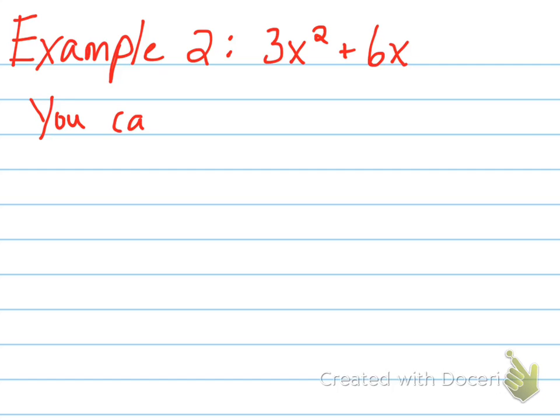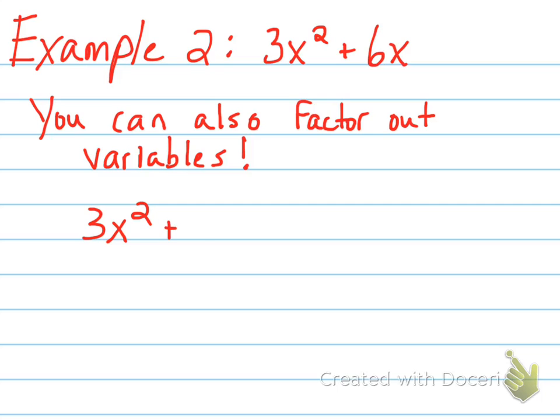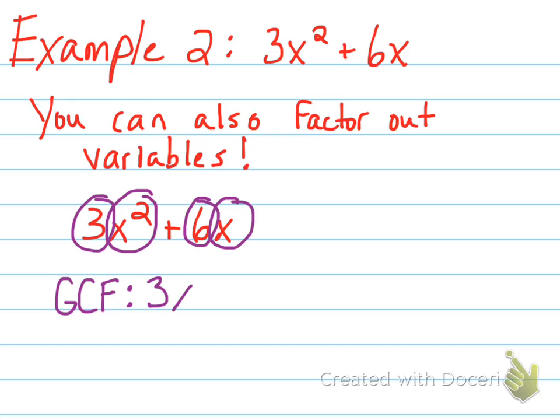Looking at this second example, I want to start the same way I did in the last one, by looking at both numbers. But also, you'll notice that both of them share a common variable of x. So I can also factor out a variable. So when I look at this, my greatest common factor, I'm going to start with 3, because 3 is the largest number that can divide evenly into both 3 and 6. Then I'm going to look next at the variables. They both have x's, and I'm going to look at my smallest exponent that I can factor out. Since the 3x squared has 2, and the 6x only has x to the first power, the most I can factor out of both terms would be a single x.